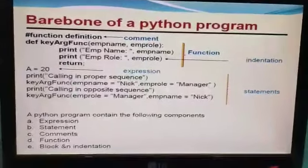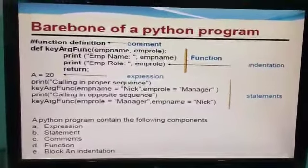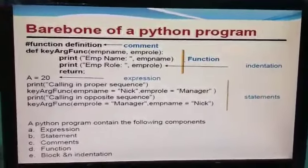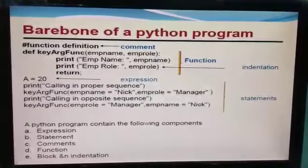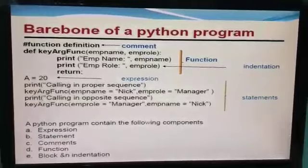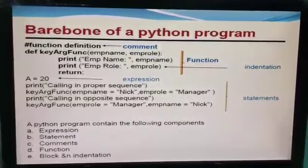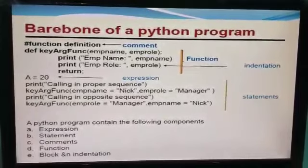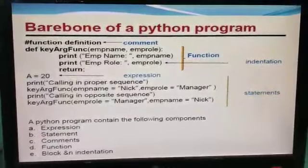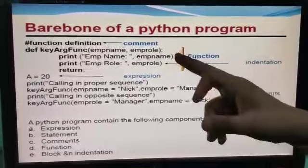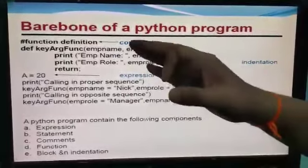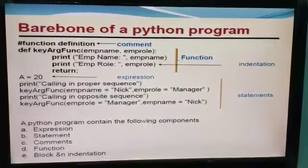This indentation represents that these statements are present inside this function. When we create a control statement, loop, or function in Python, after creating it we use a colon sign and press Enter. After pressing Enter, Python interpreter automatically provides space, and when we enter and write the next statements, we remain within the function or loop.